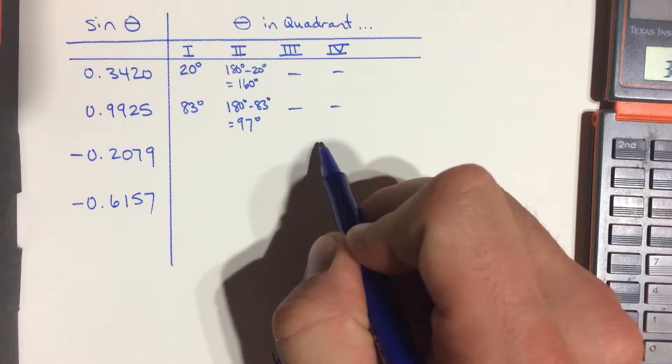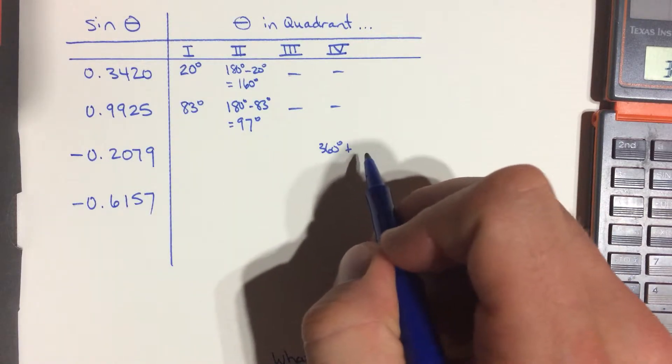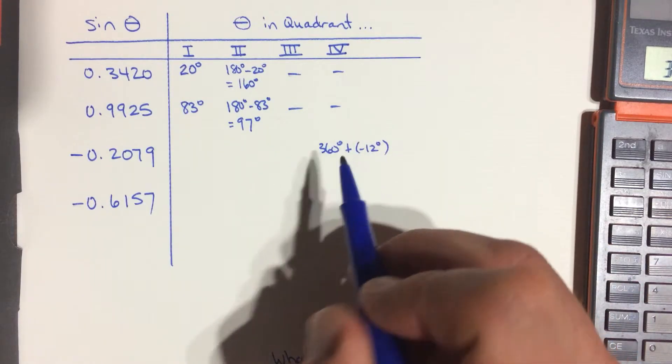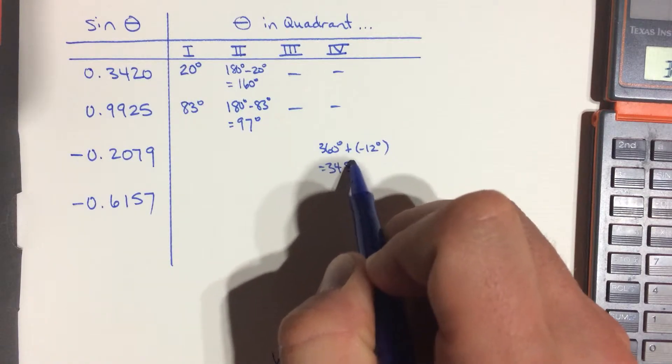So if I'm here, that's 360 plus the value that I got there, which was negative 12. Or that's the same as 360 minus 12, which is 348 degrees.